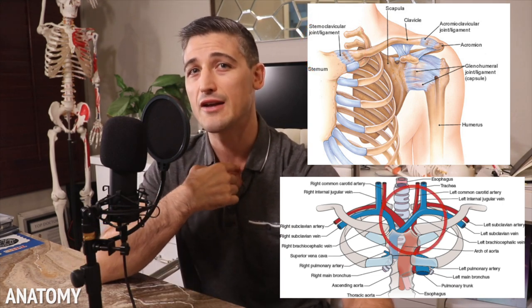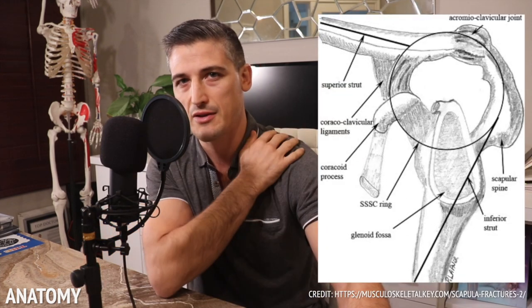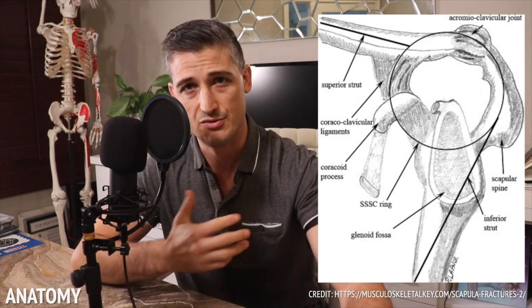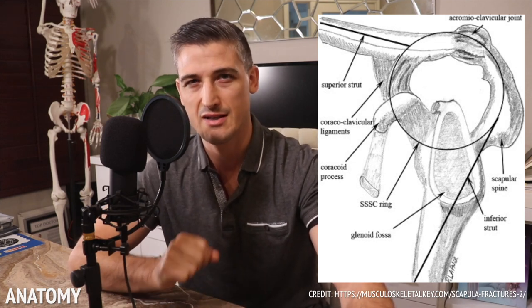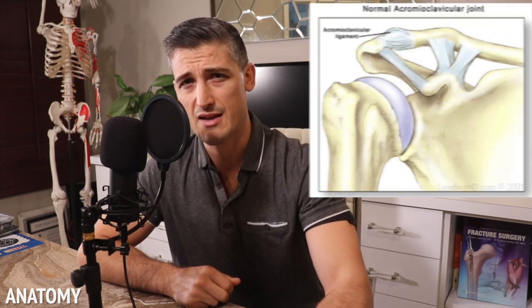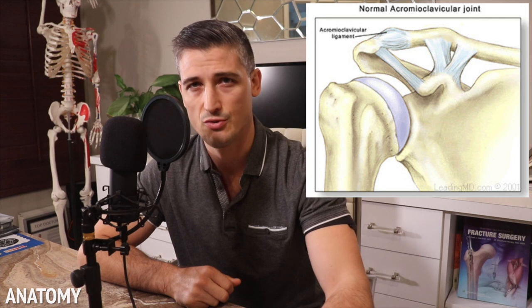A posterior, or backwards, dislocation of the sternoclavicular joint is a surgical emergency, as the clavicle may be poking into some very important structures. Going back to the connection between the scapula and the clavicle: without these connections, the arm is not supported and gravity takes it down. The connections in this area create a shoulder suspensory complex, and the AC joint and the CC ligaments are crucial to it working.